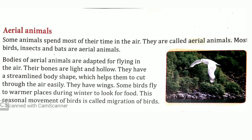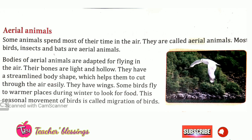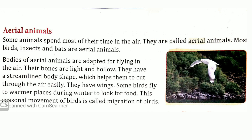Bodies of aerial animals are adapted for flying in the air. Jo aerial animals ki body hoti hai woh is tarah se adapt hoti hai ki woh aasman mein ud sake. Their bones are light and hollow — unki jo haddiyaan hoti hain woh kaafi halki aur hollow hoti hain. They have a streamlined body shape which helps them to cut through the air easily — unki body shape streamlined hoti hai, jaise naav ka design hota hai, usi taraf se chiriyon ki body ka bhi design hota hai, taaki unko aasani se hawa cut karne mein help ho aur woh aasman mein ud sakein.